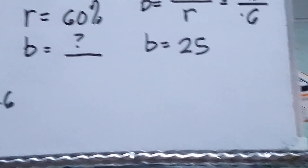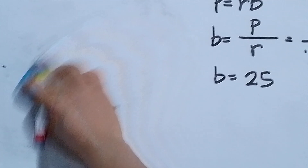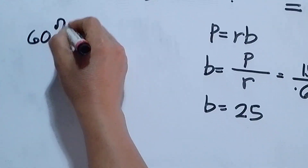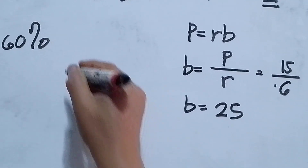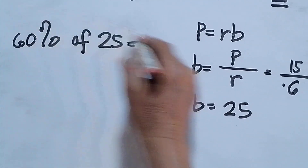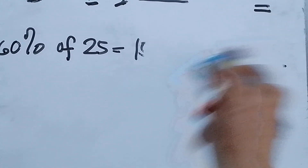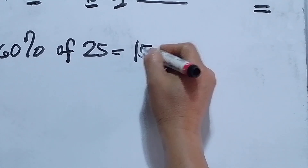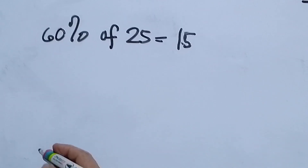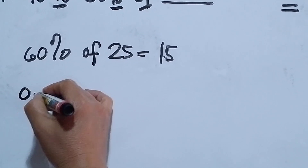Let us check if B equals 25 is correct. We verify that 60 percent of 25 equals 15. Converting 60 percent to decimal: divide by 100, cross out the symbol, cross out a zero, giving 6 over 10, which is 0.6.